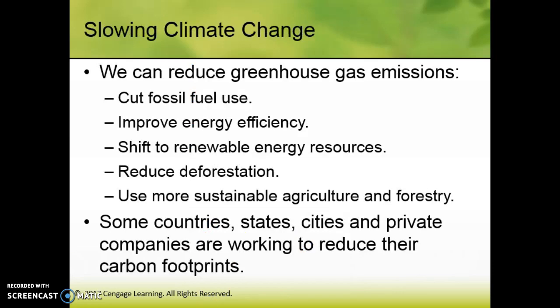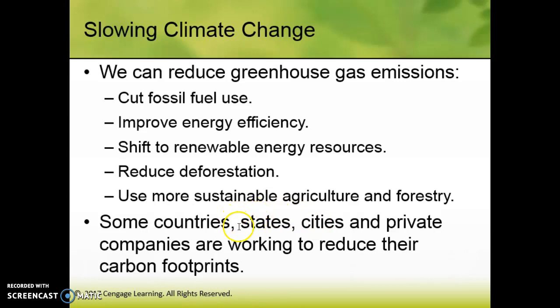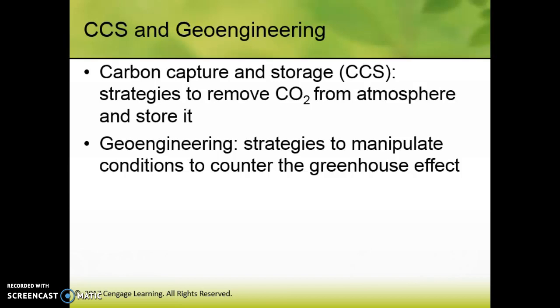So how do we slow climate change? Reduce greenhouse gas emissions, cut fossil fuels, improve energy efficiency with things like Energy Star appliances, and shift to renewable energy resources. Reduce deforestation, use more sustainable agriculture and forestry, and reduce your carbon footprint. We need to act as individuals, influence our companies, and influence our cities, states, and country to be better. It has to start somewhere, so it might as well start with me.